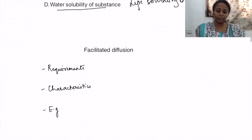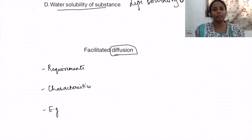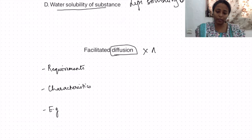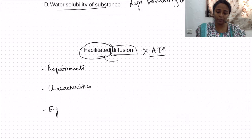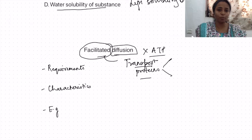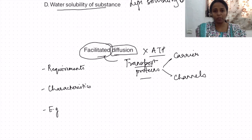Next is facilitated diffusion. It is still diffusion — transport is from higher to lower concentration — and it does not require ATP since it is downhill transport. However, certain proteins facilitate this transport. Substances that are not lipid soluble can move from higher to lower concentration via transport proteins. These transport proteins can be of two types: carriers and channels.